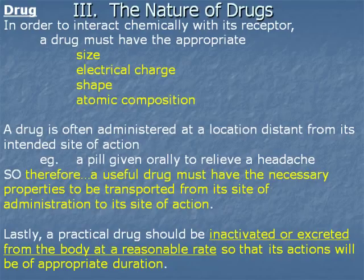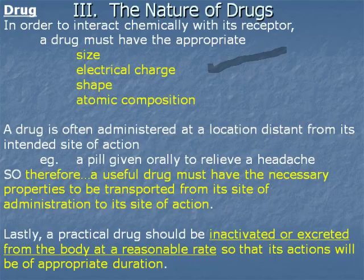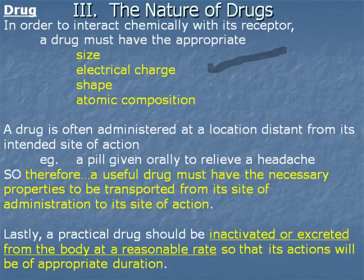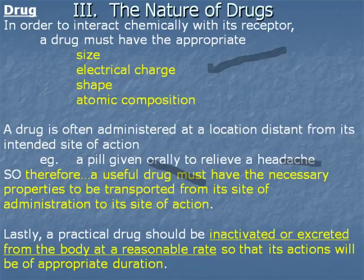For a drug to interact with its receptor, it must be the right size, shape, electrical charge, and atomic composition — all of which impact how it interacts with the receptor. Usually a drug is administered at a location distant from its intended site of action. For example, aspirin taken orally must move from the digestive tract into systemic circulation up to the blood vessels in the head. The drug must have the necessary properties to move to its target site, and ultimately it will be inactivated or excreted, giving it a limited duration of action.